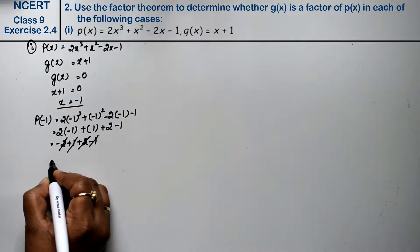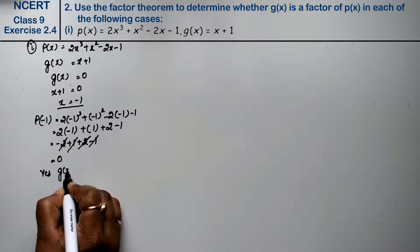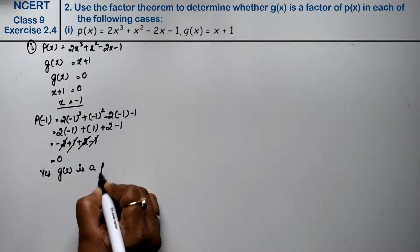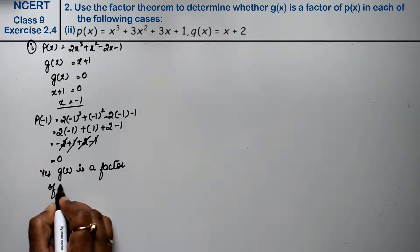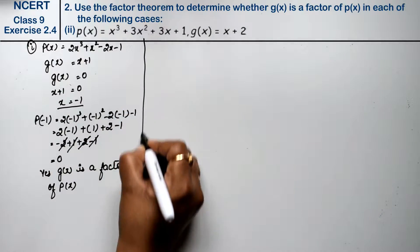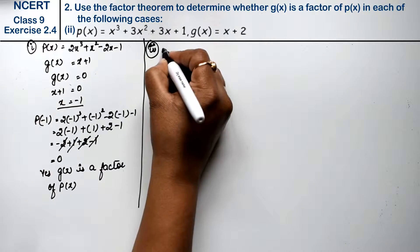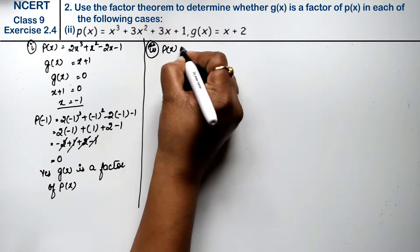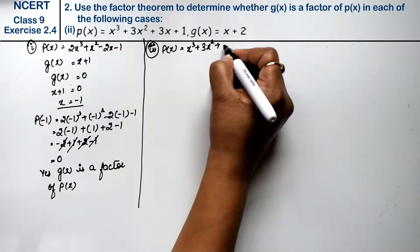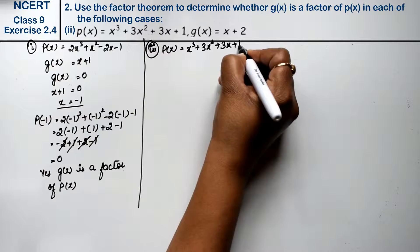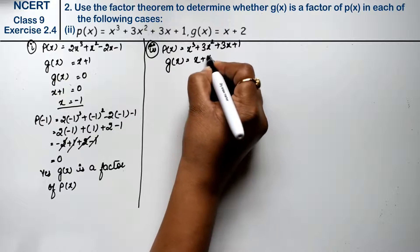Hence it is 0, so g(x) is a factor of p(x). Let's do second part. Second part is p(x) = x³ + 3x² + 3x + 1, and g(x) = x + 2.